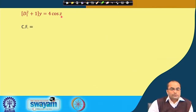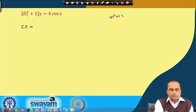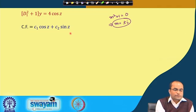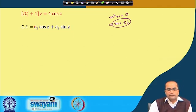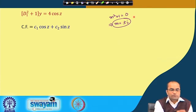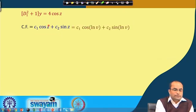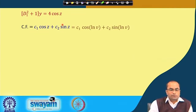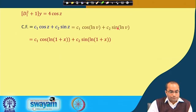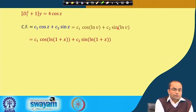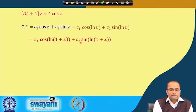The auxiliary equation is m² + 1 = 0, giving m = ±i. The complementary function in z is c₁·cos(z) + c₂·sin(z). Converting back: z = ln(v) = ln(1+x), so the complementary function is c₁·cos(ln(1+x)) + c₂·sin(ln(1+x)).